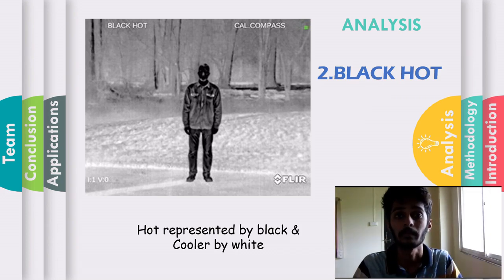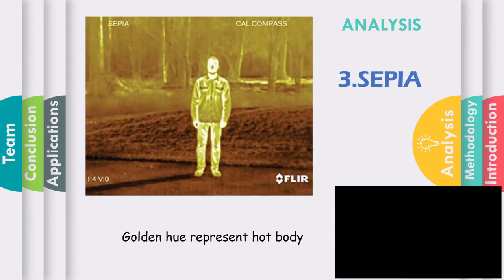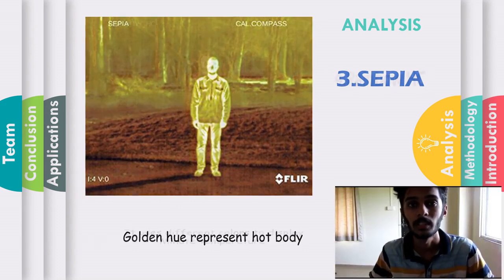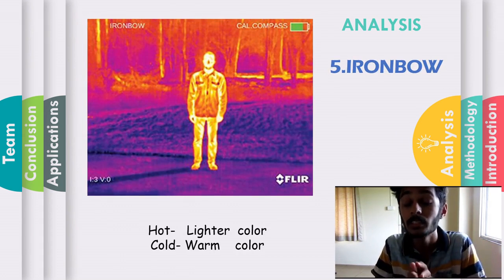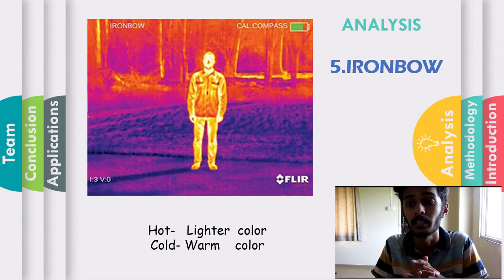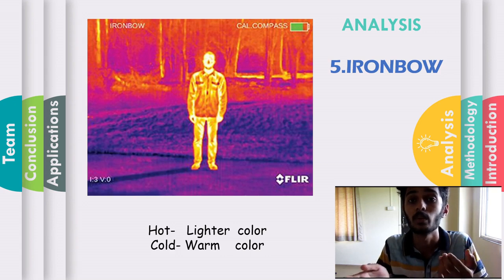The third type is sepia: in this type, the hotter body is represented by a golden hue color. The fifth type is rainbow HC: in this type, the color varies from violet to red. This is the type where very sensitive and minor temperature differences are detected, and it is used where small changes in temperature and high accuracy are required.